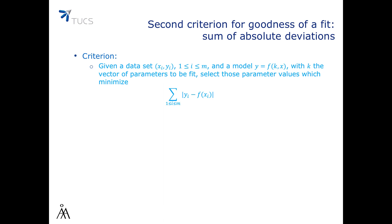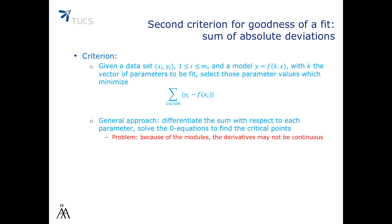In other words, we minimize the sum of the absolute differences between the dataset and the prediction of the model. In principle, such a problem is solved by differentiating this sum with respect to each parameter, since those are the points where the sum is minimized.